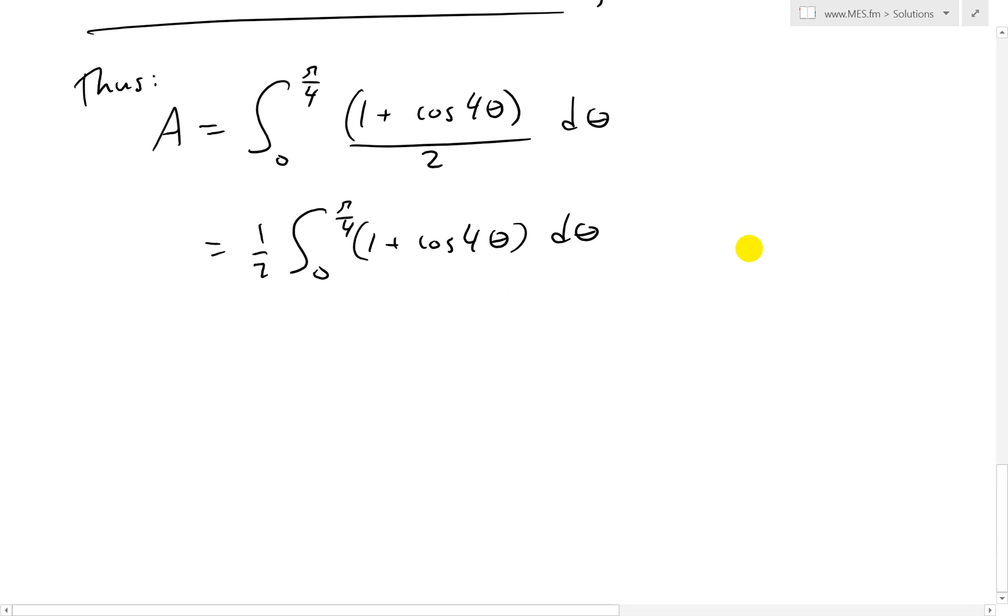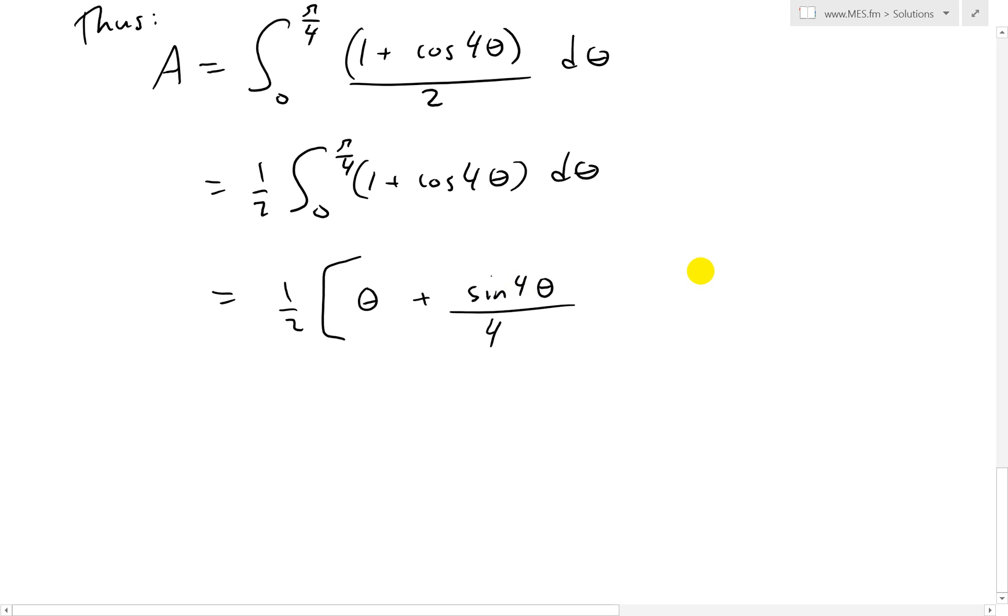And now we could just easily solve this integral. So this equals - this is just 1 half, leave it out there. Integral of 1 is just going to be theta. Integral of cosine 4 theta, that's going to be sine 4 theta, but include the chain rule. So divide by 4, because if we take derivative of sine 4 theta, that's just cosine 4 theta, times by the 4 inside. So that's what we have. And this is from 0 to pi over 4.